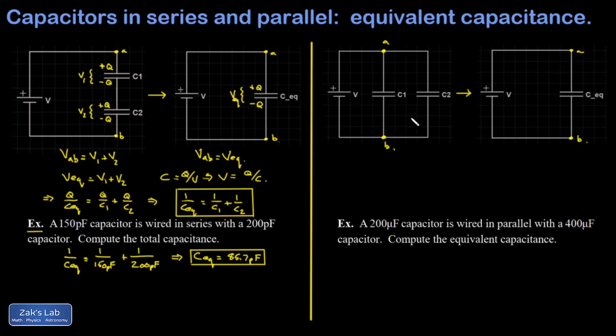Now I can tell this is a parallel combination because there's two branches. There's a choice here for which way current goes. One branch goes through C1 all the way from the high side of the battery to the low side. The other one goes through C2 from the high side of the battery to the low side.